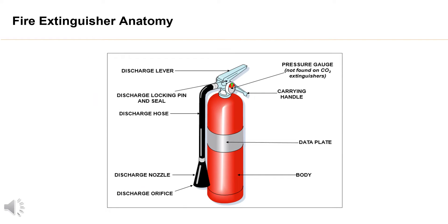Fire extinguisher anatomy. The main parts of a fire extinguisher are five: body or tank, a valve assembly, a hose or a nozzle, an extinguishing agent, and a propellant.